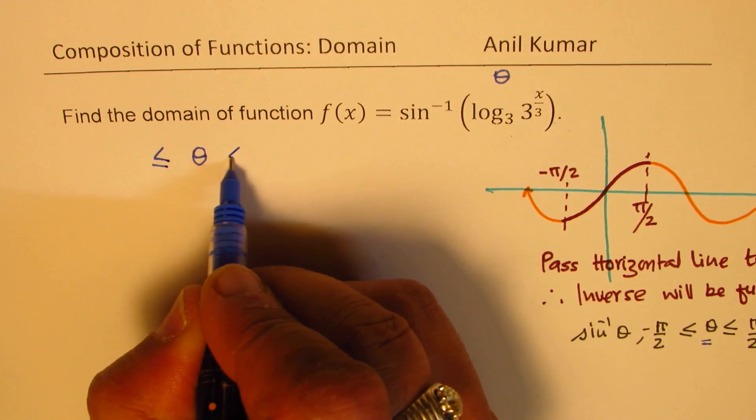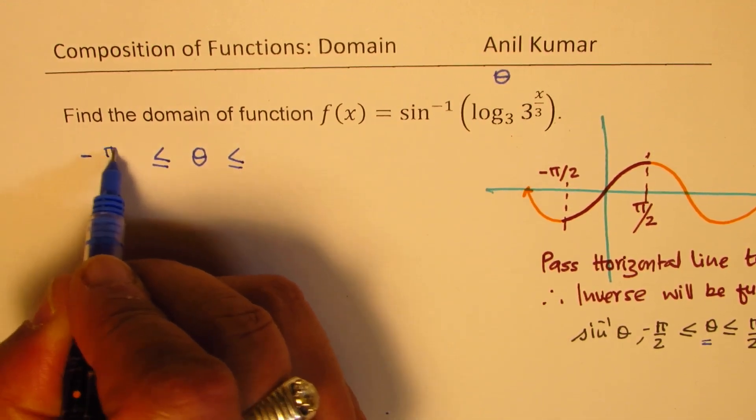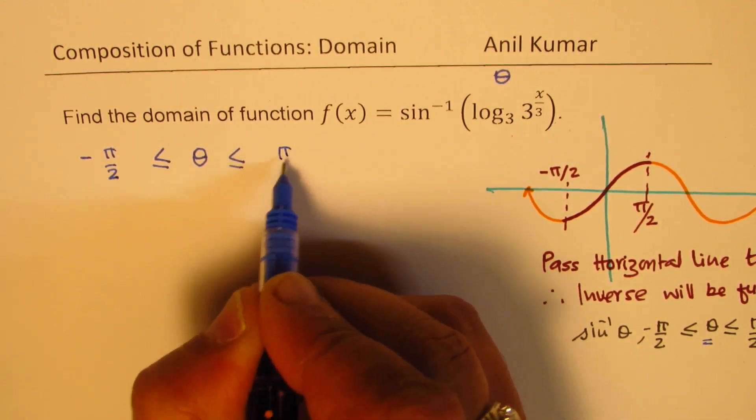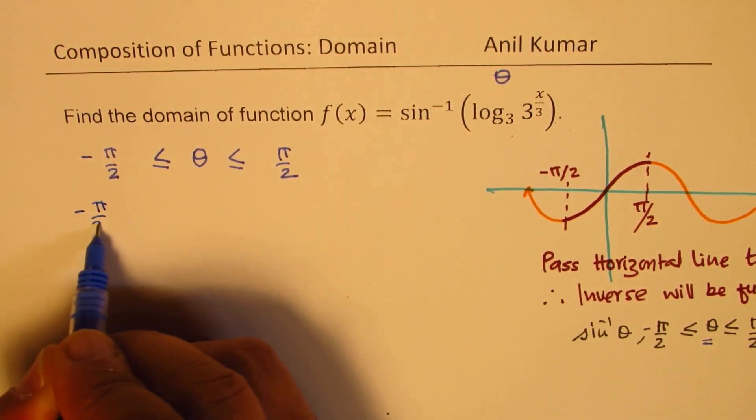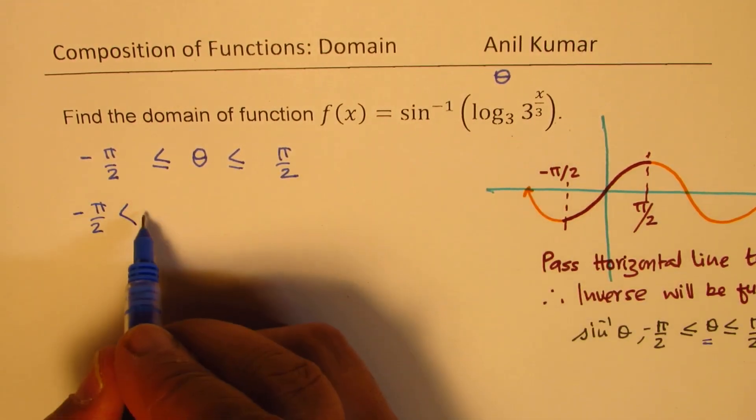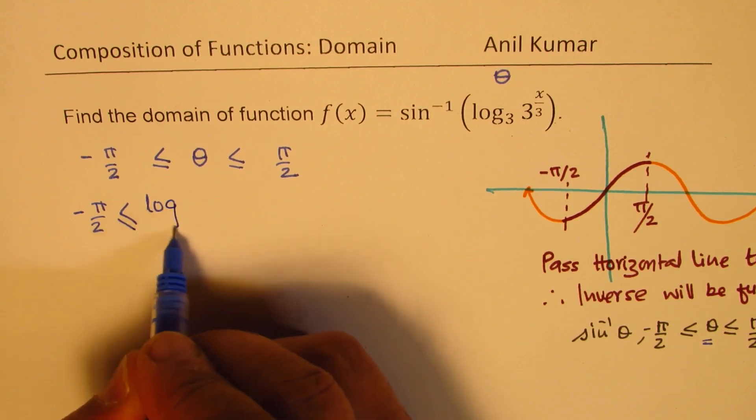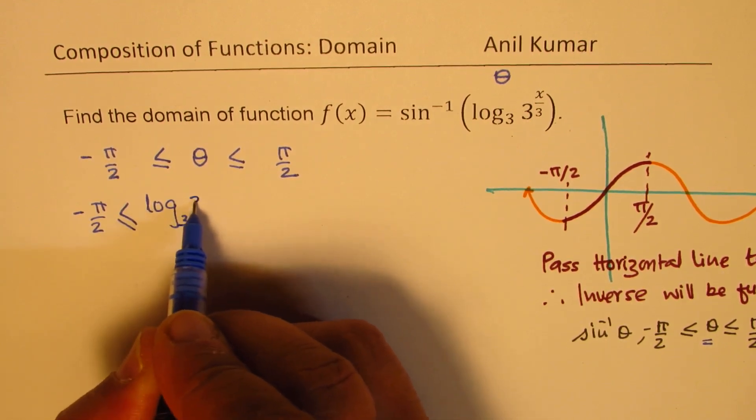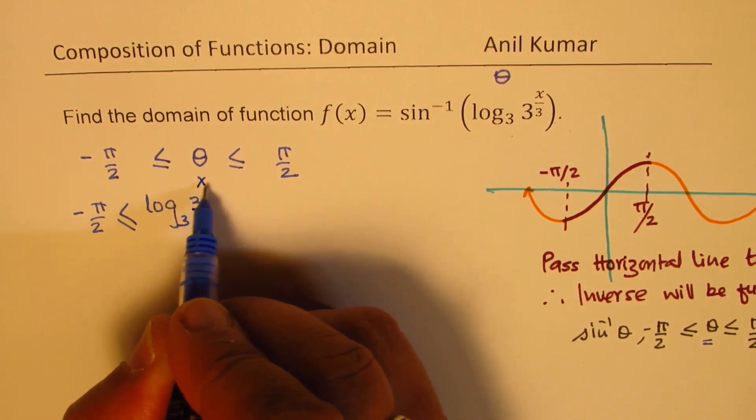So we'll begin from here, that theta should be between minus pi by 2 to pi by 2. And in the given example, the value of theta is log to the base 3 of 3 to the power of x by 3.